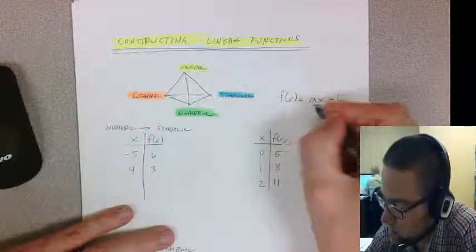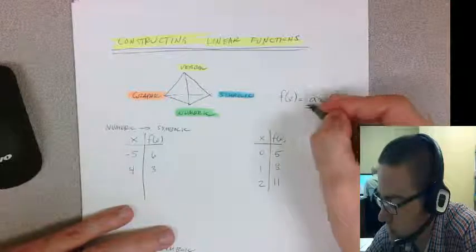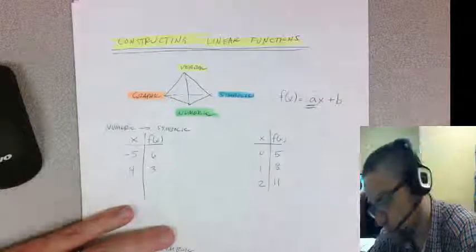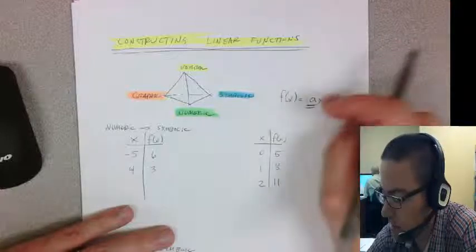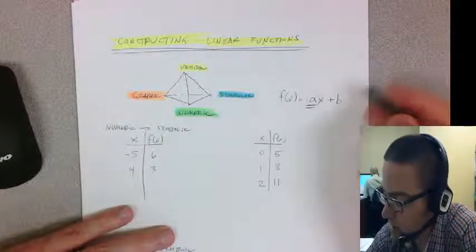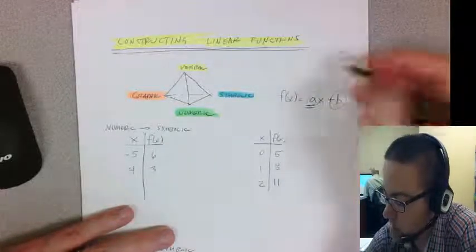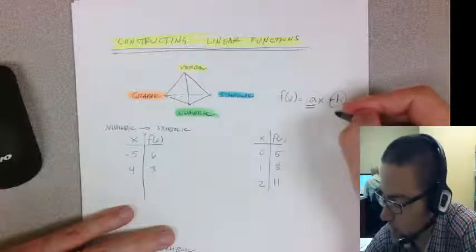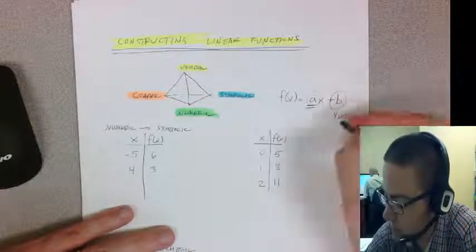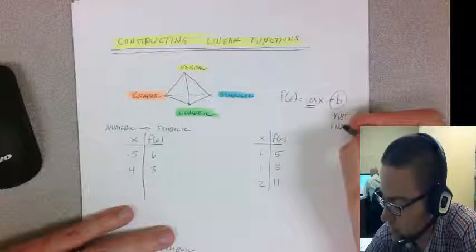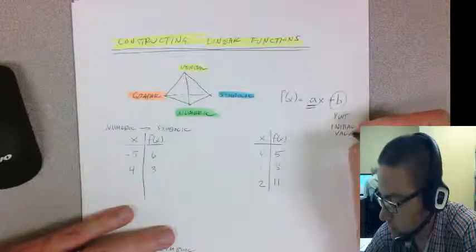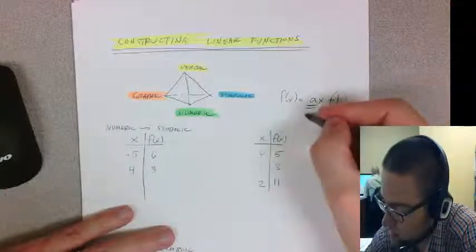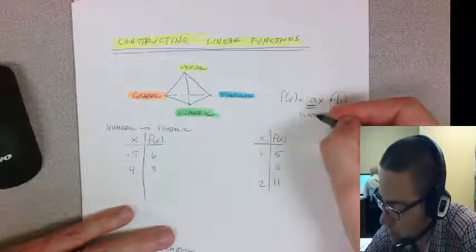a is the coefficient on x—the constant rate of change that you see each time you're consecutively adding that amount. b is what we call our initial value or y-intercept when x equals zero. a is our slope or rate of change.